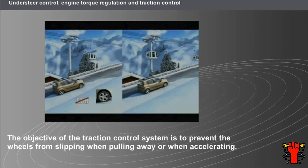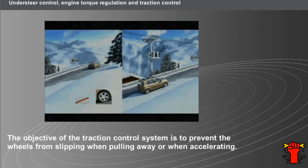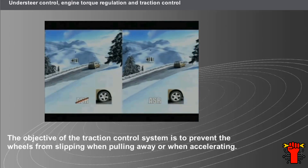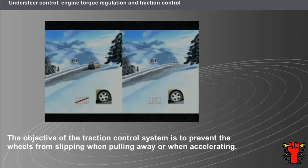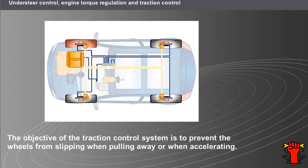The traction control system is an additional function of the electronic stability program. The objective of the traction control system is to prevent the wheels from slipping when pulling away or when accelerating. Depending on the conditions of grip, the traction control system intervenes to reduce engine torque and to apply braking to the wheel that is slipping. To carry out this function, the computer uses the information from the wheel speed sensors and controls the activation of the pump and its solenoids for the wheel concerned. The traction control function is operational whatever speed the vehicle is travelling.